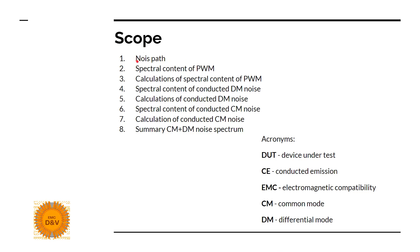First we will have a quick reminder of how common mode and differential mode flow in the device. Then we'll see what equation describes the spectral content of a PWM signal. Next we will calculate our PWM spectrum for an example signal, see how much differential mode and common mode noise is present, and view a summary with both spectrums on one graph.